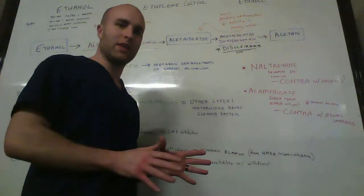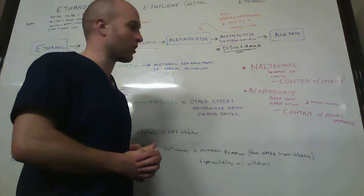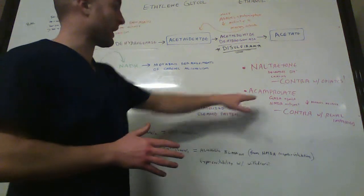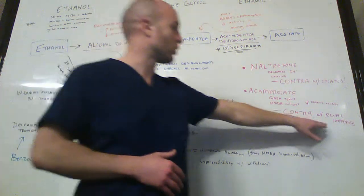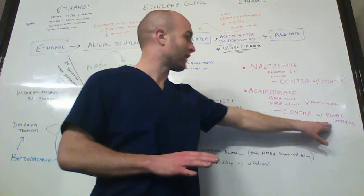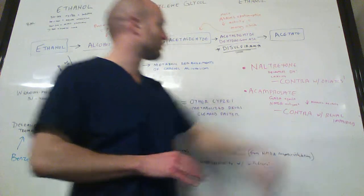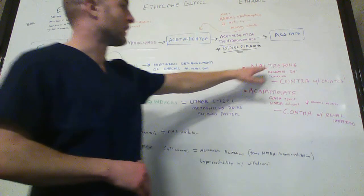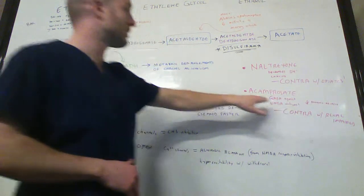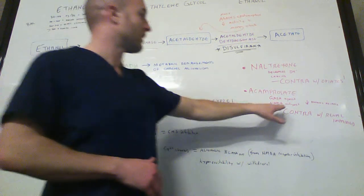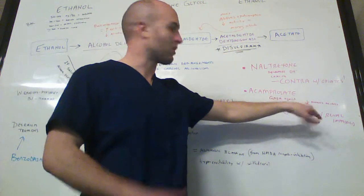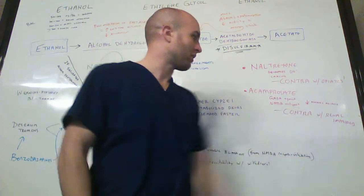But these are excreted renally, and so do not give them acamprosate to a person who is renally impaired. Contraindicated, do not give acamprosate to a person who is renally impaired. So naltrexone, decrease the craving, don't give to a person on opiates. And acamprosate, GABA agonist, NMDA antagonist, decreases alcohol relapse, contraindicated with renal impairment.